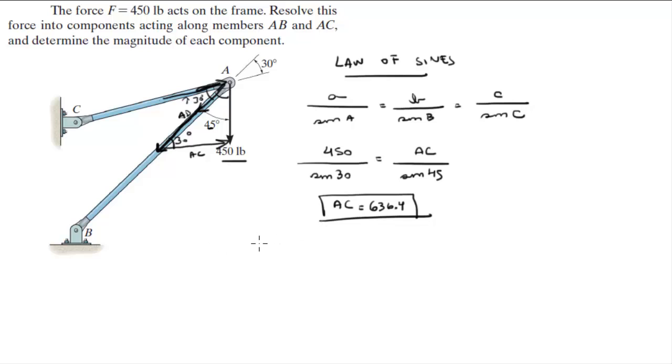And we also solve for the other side, which is 450 over sine of 30 is equal to AB over sine of this angle right here. The sum of all three angles inside a triangle is 180, so 180 minus 45 minus 30 comes out to be 105. So this is sine of 105, and when we solve for AB you get that this is equal to 869.3.